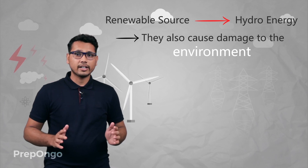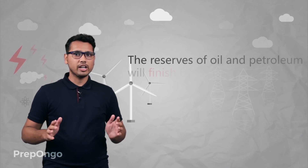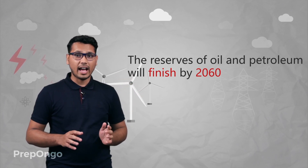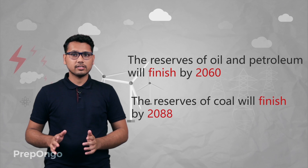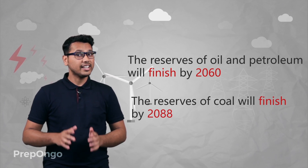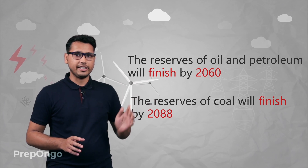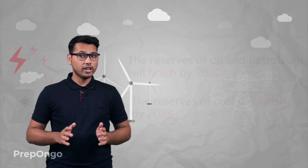The rate at which we are consuming fossil fuels, the reserves of oil and petroleum are expected to finish by maximum 2060, and the reserves of coal are estimated to end by maximum 2088. So we have to control our utilization of energy resources so that these resources are also available for future generations to use.